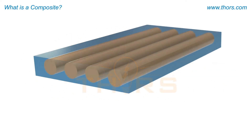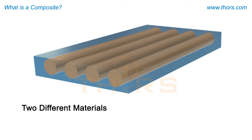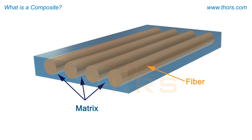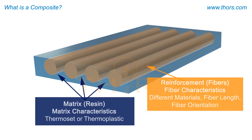Composites at their most basic are a combination of two different materials that are synthesized to create a new material. One of the two materials is a fiber and the other one is a matrix, also known as a polymer or resin, which binds the fibers together. The purpose of synthesizing or joining two materials with different properties together is to create a material with a tailored stiffness and strength.